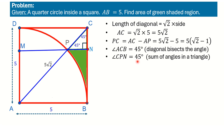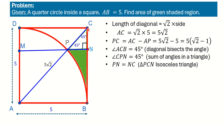Since angle PCN is 45 degrees and angle CPN is 45 degrees, triangle CPN is an isosceles triangle. This means side PN equals side NC.